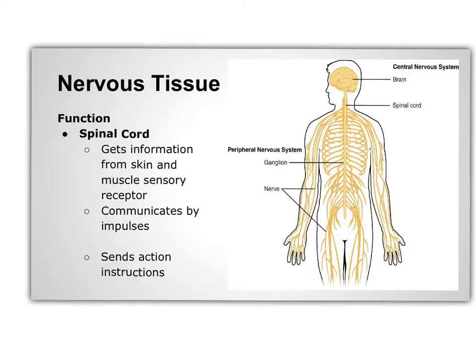Functions of the nervous tissue include acting as a sensory input. All living cells have the capability to react to stimuli. The nervous tissue is made up of numerous nerve cells.